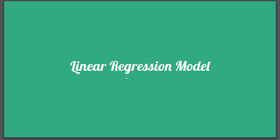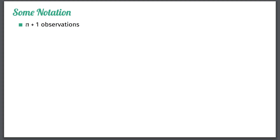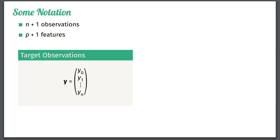Let's do everything a bit more formal. First of all we need some notation. We are going to say that we have n+1 observations and p+1 features. We can collect all the different targets into a single vector, where the first value is the target of the first observation, the second value is the target of the second observation, and so on down to n. Note that we start numbering on zero because Python starts numbering on zero. We call this target vector y.